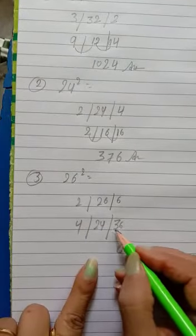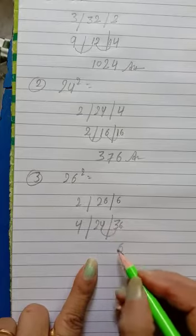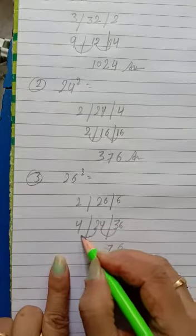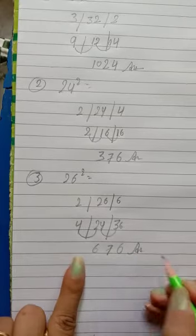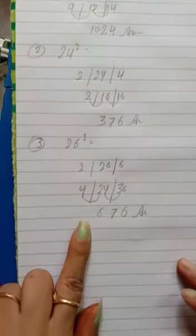6 is 6. 6 plus 3 plus 4 is 7, then 2 plus 4 is 6. Your answer will be 676. One last more question.